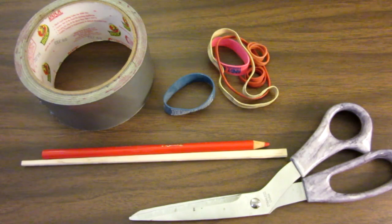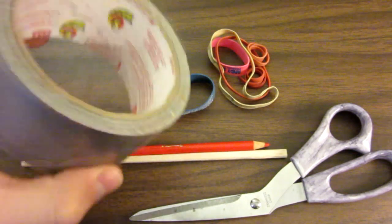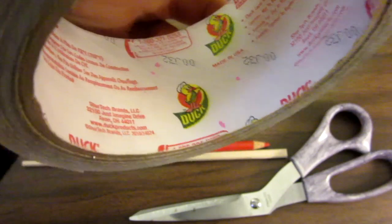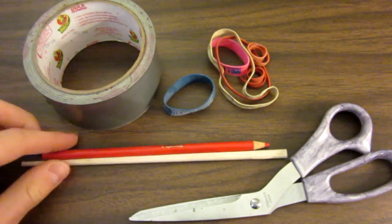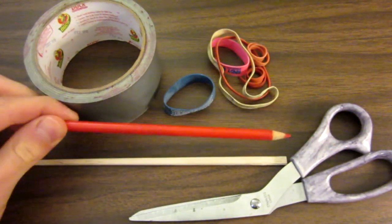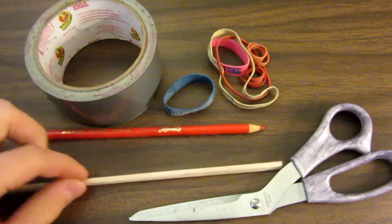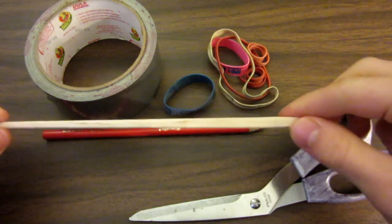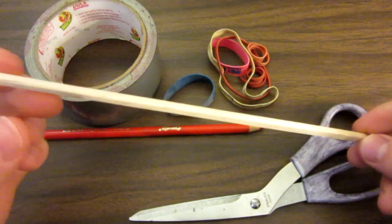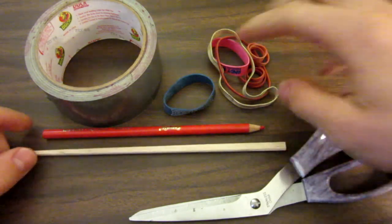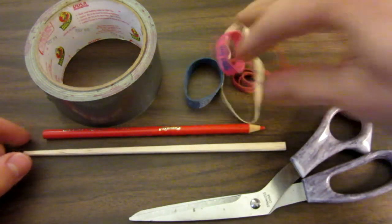So for the duct tape gun, you are going to need duct tape obviously - make sure it's the real stuff, not the dollar store duct tape. A pencil crayon or pencil for measuring, a shish kebab or in this case I actually have a chopstick, an elastic, and some scissors.